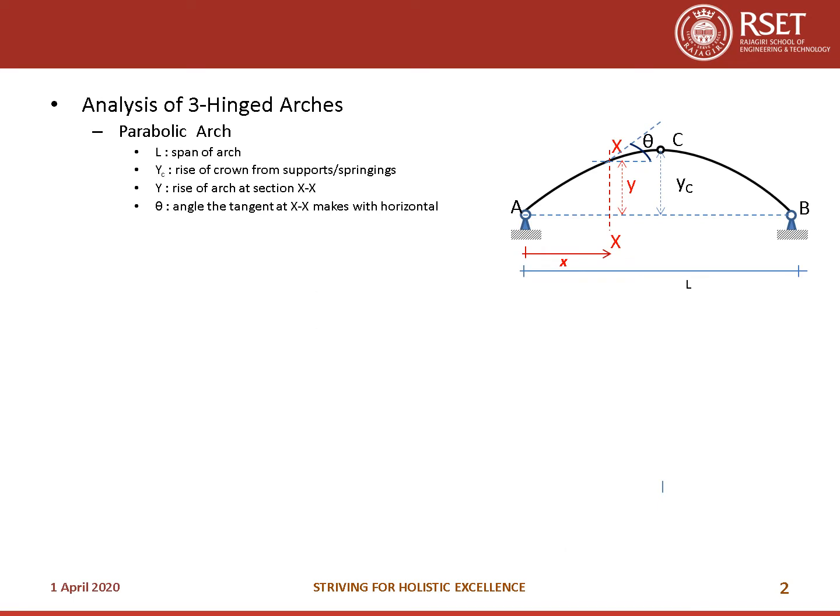Let us see the analysis of three-hinged arches — first is the parabolic arch. As shown, let L be the total span of the arch, YC be the rise of the crown from the support or the springings. From this horizontal line up to the crown, the vertical distance is given as YC. Y is the rise of the arch at section XX. If we cut any section XX, let Y be the vertical distance from the support to the cut section, X be the horizontal distance from the support to the cut section, and let theta be the angle the tangent at XX makes with the horizontal.